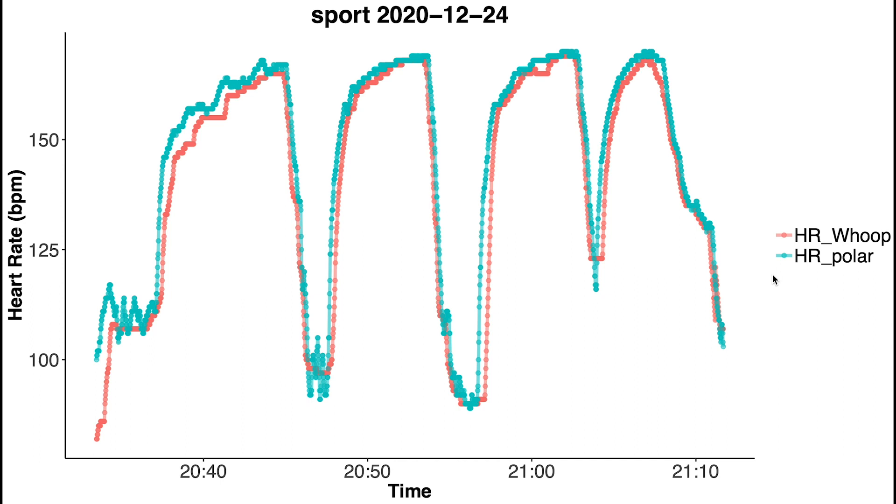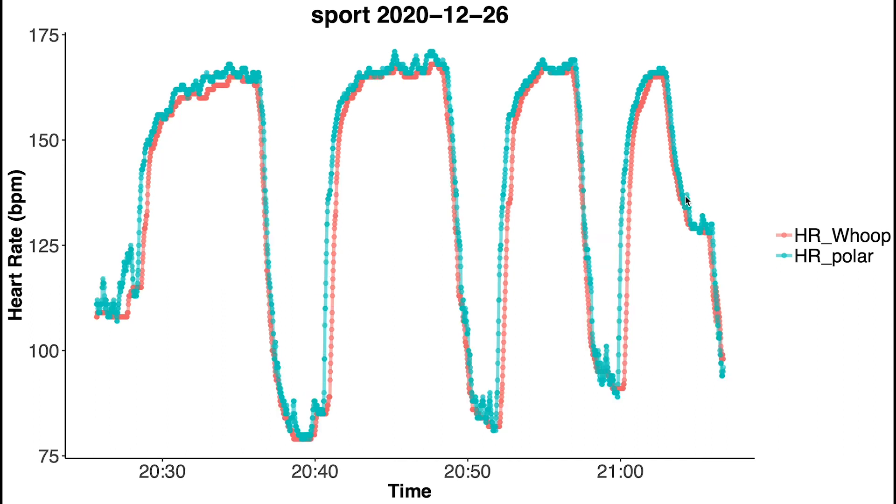Now, let's see how this looks for the second training session. This is the one I've plotted here and generally we see the same pattern. My heart rate according to the WHOOP strap is a little bit below my heart rate according to the Polar H10 and in the increase in heart rate, there's a slight delay in increase, whereas with the decrease, there's a very good match.